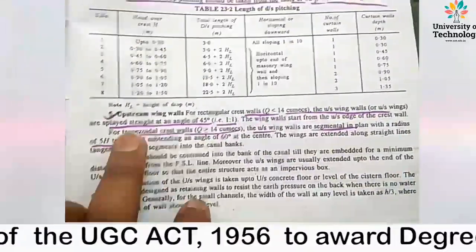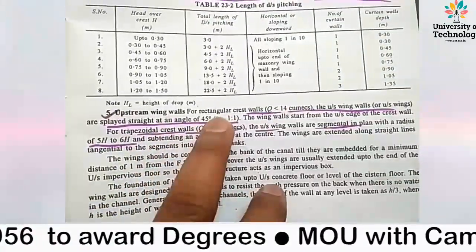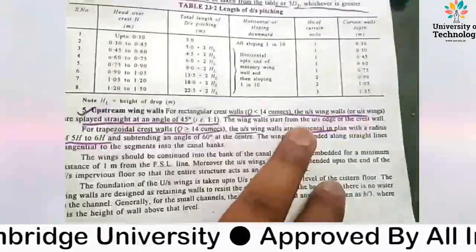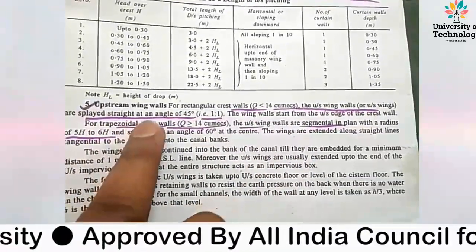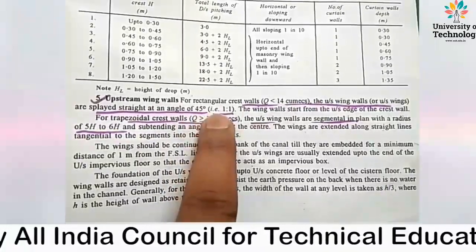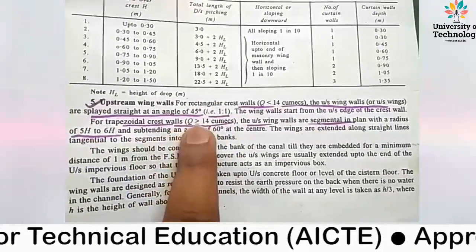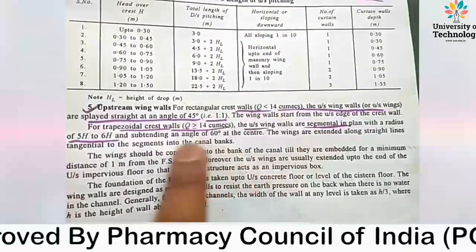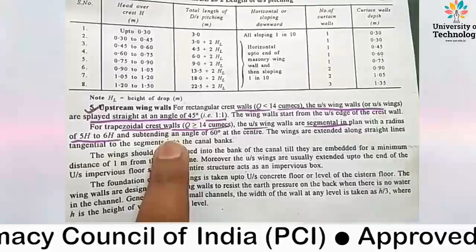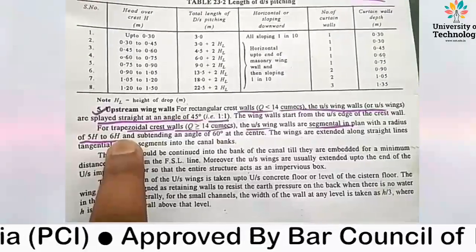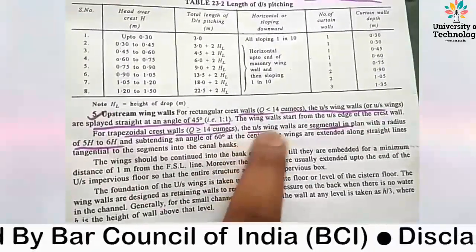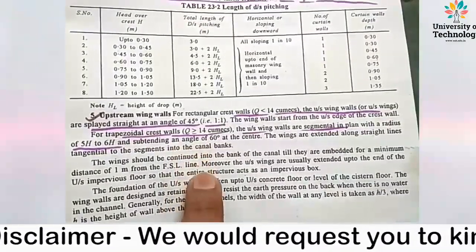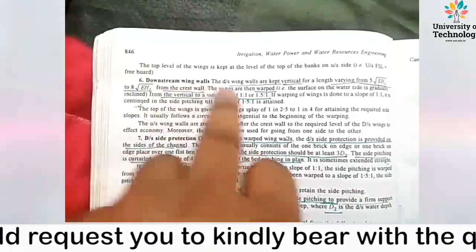The next point is upstream wing walls. There are two cases: if the discharge is less than 14 Q-max, the upstream wing walls are placed straight at an angle of 45 degrees, giving a ratio of 1 to 1 for the trapezoidal case. If the discharge is greater than or equal to 14 Q-max, the upstream wing walls are segmental in plan, with a radius of 5H to 6H and subtending an angle of 60 degrees at the center.